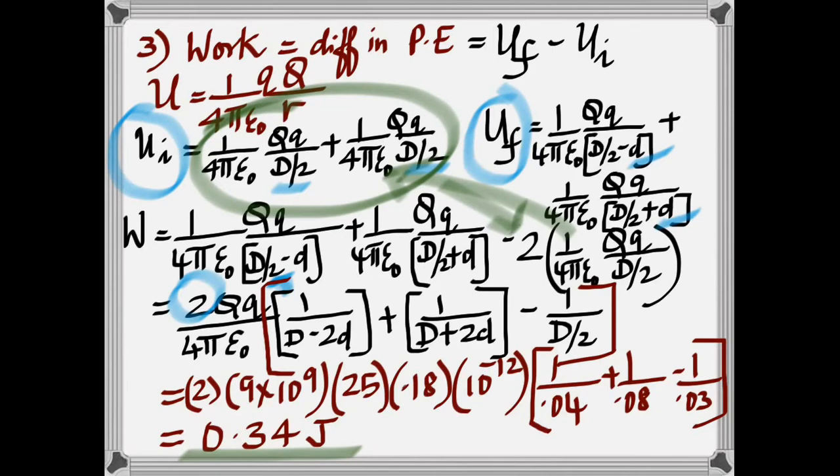And this obviously is twice one of those. That's why you find that 2 here. So the work done is Uf minus Ui. And there's a lot of math in it. And as you substitute, you get it as 0.34 joules.